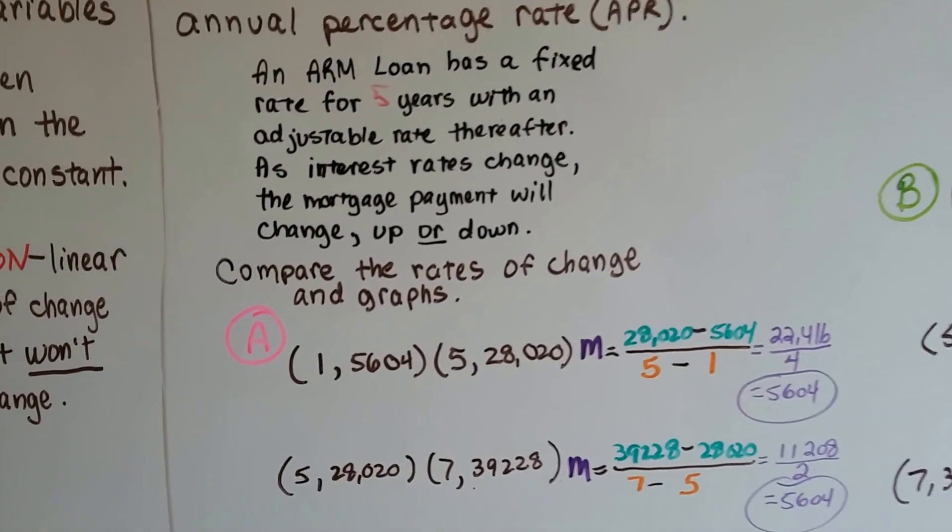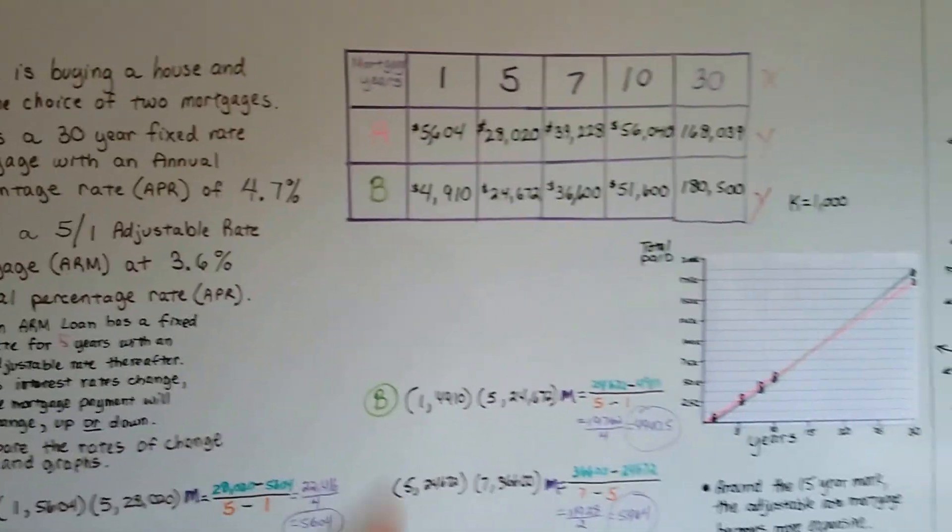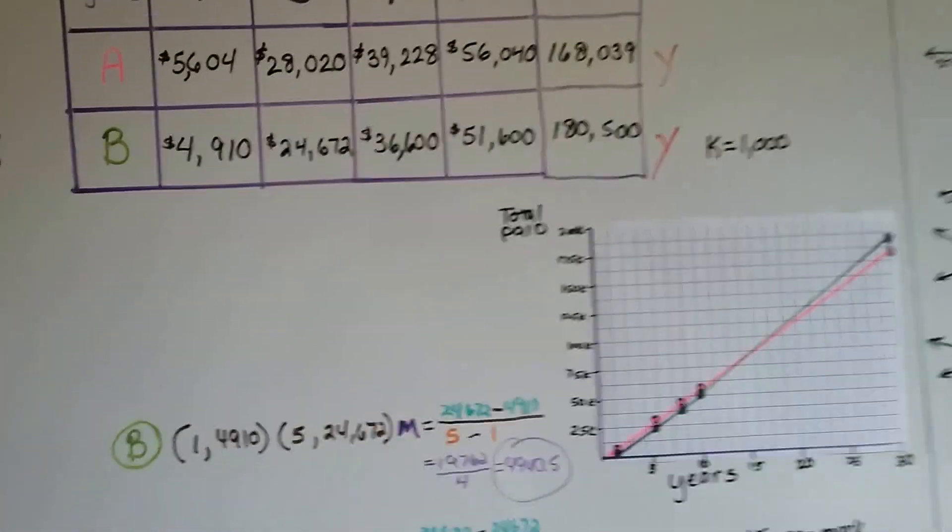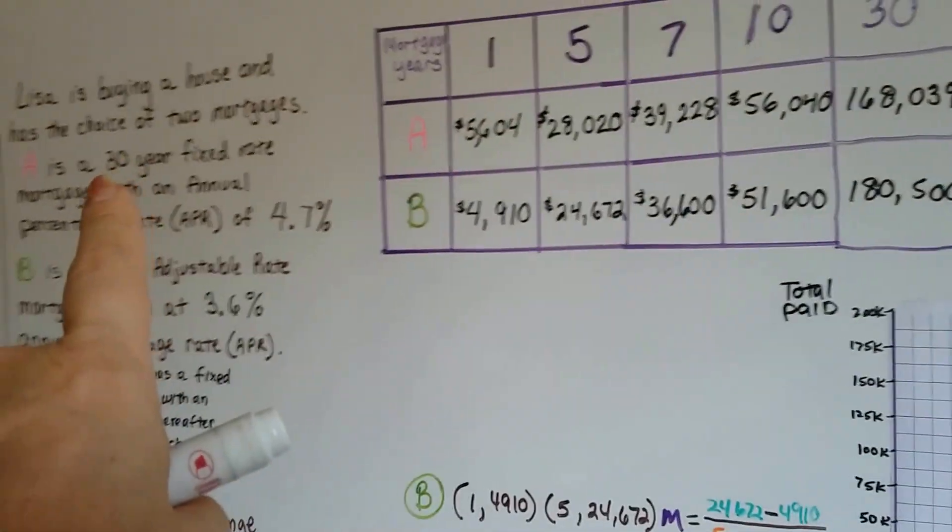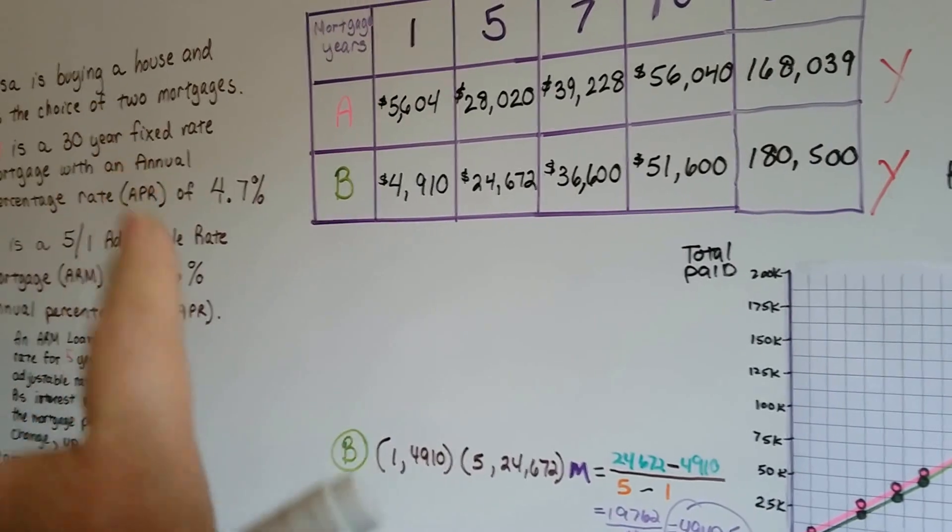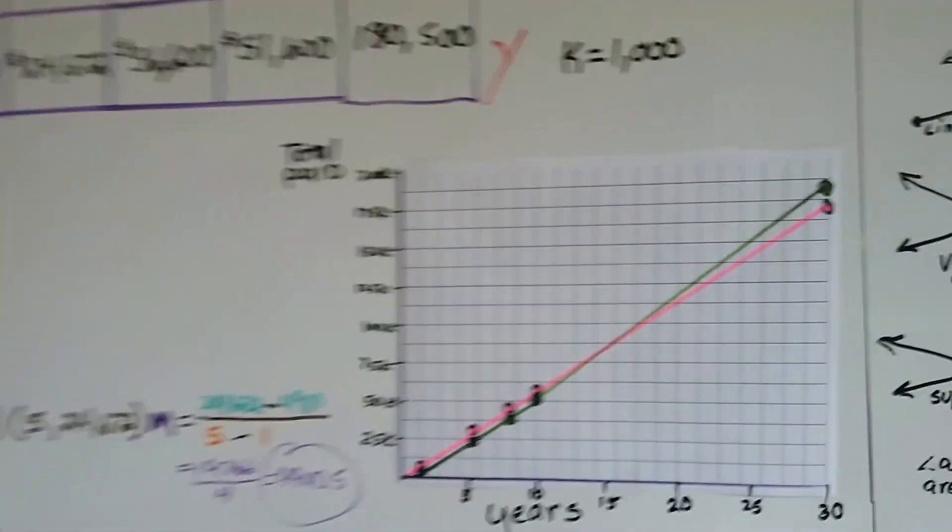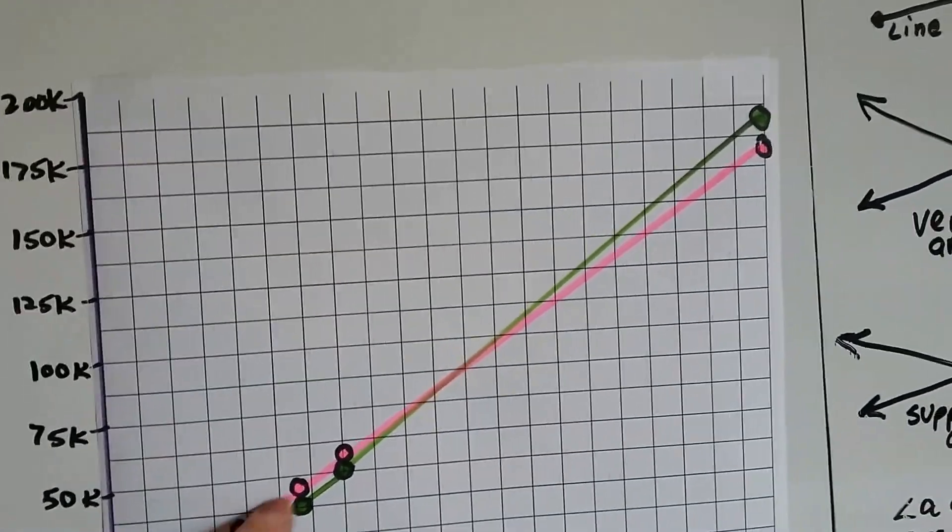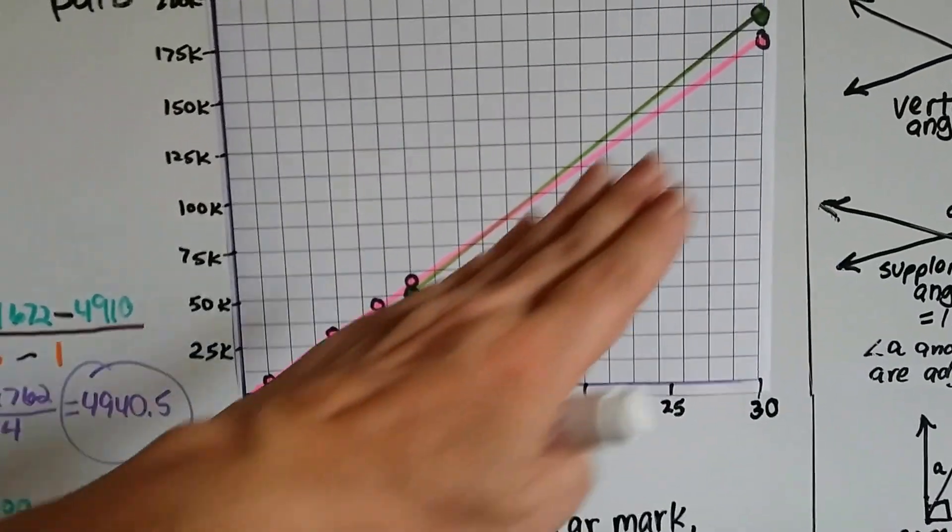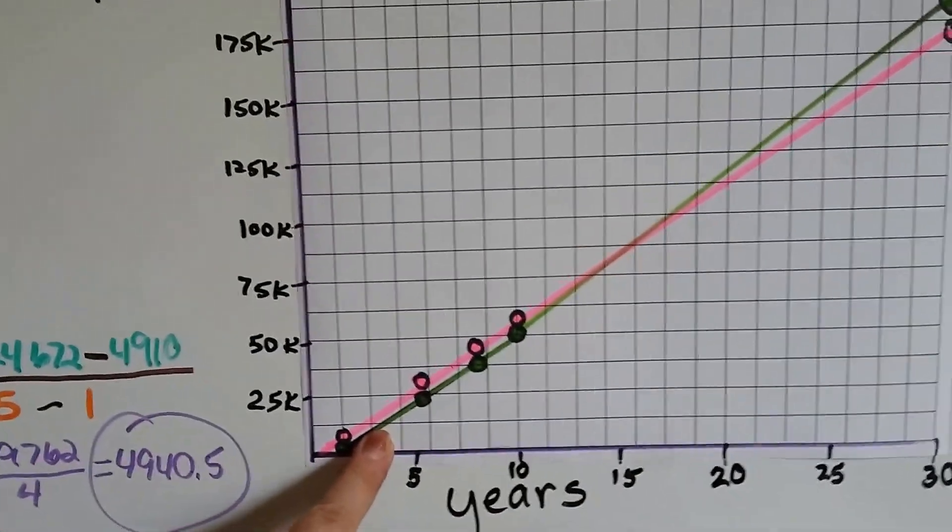So we're going to compare the rates of change in graphs for the two different mortgages. We have a table of values, and here we have our graph. If you look at the graph, A is the 30-year fixed rate mortgage, and in that kind of mortgage, the payment is the same every month for 30 years. So the pink line is making this nice, smooth, constant angle going up, and the green line is the adjustable rate one.